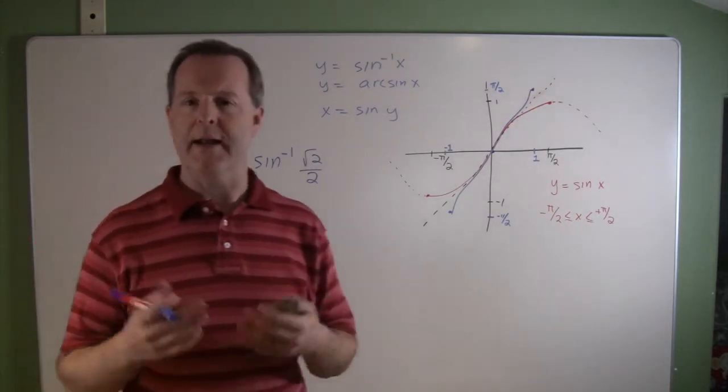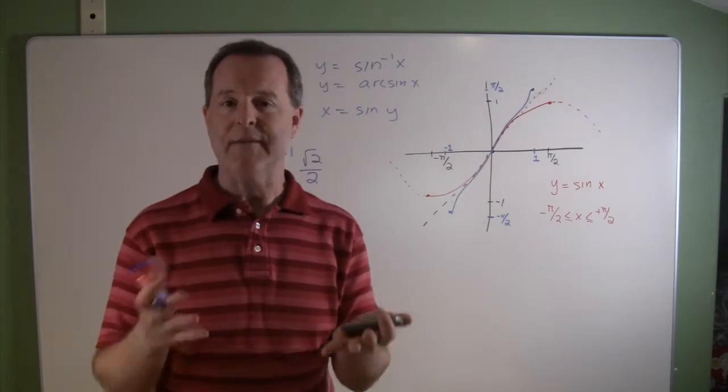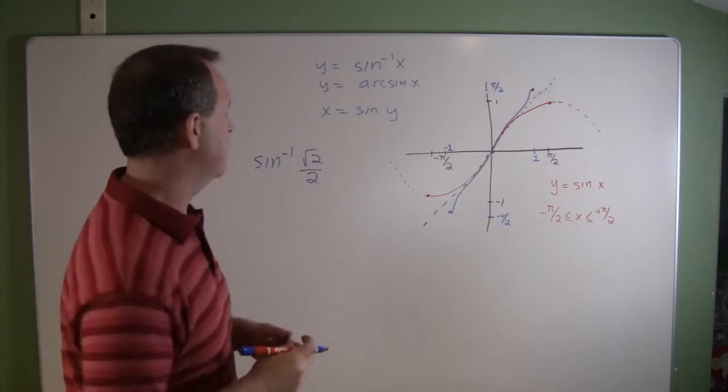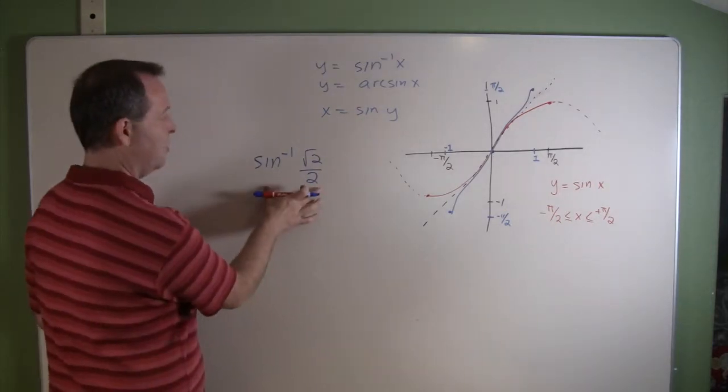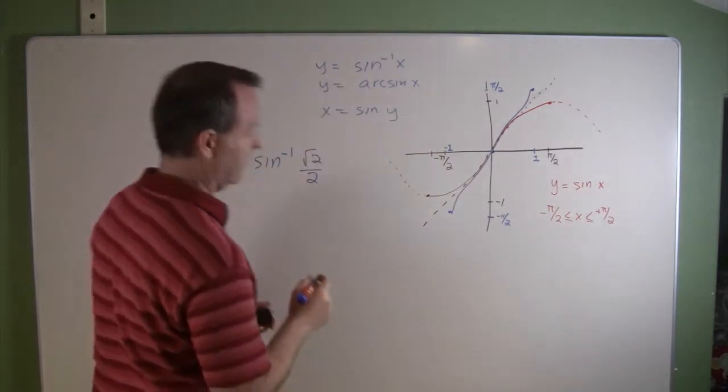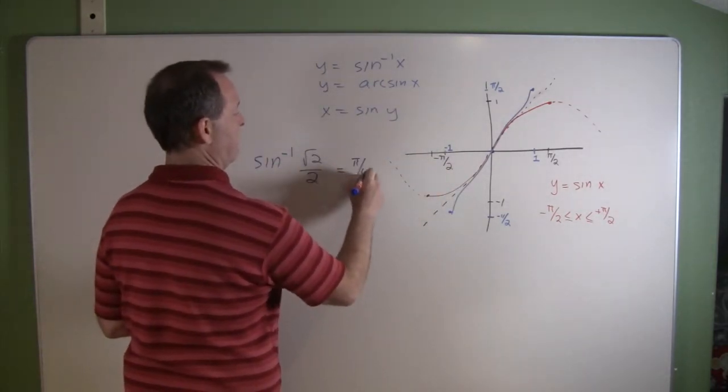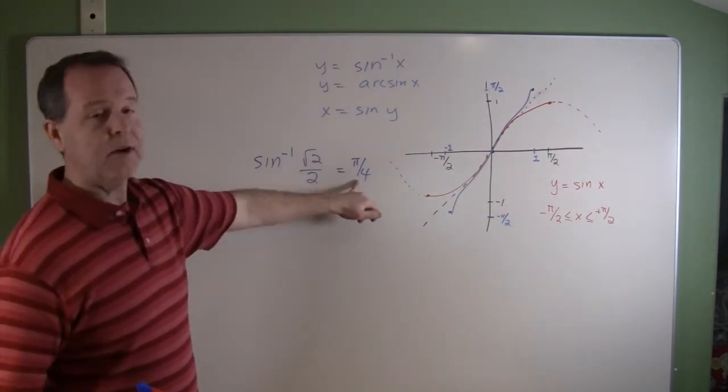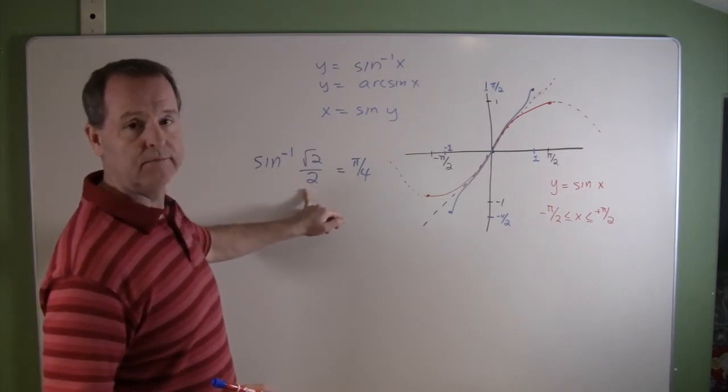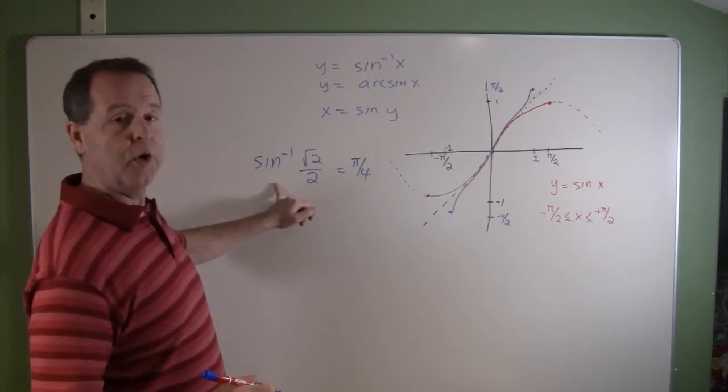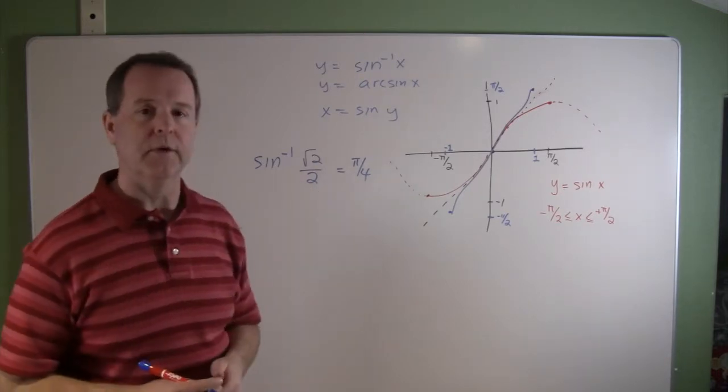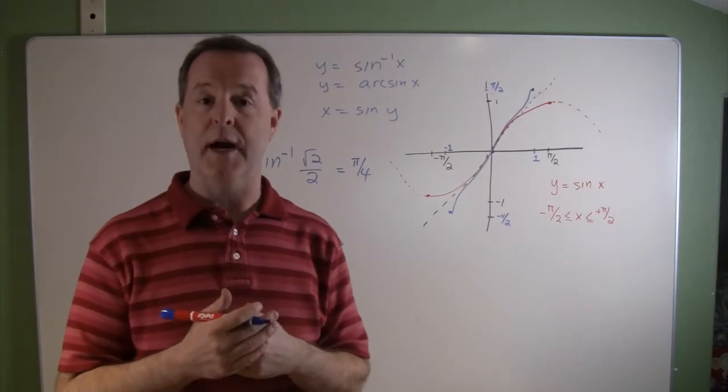And this is where we have to go back and kind of remember some of those key points, those key angles, those key values that we had for sine functions. So we remember whose angle makes a root 2 over 2? And that was pi over 4. So the angle pi over 4, the sine of pi over 4 is root 2 over 2. And how this says again is whose angle produces a root 2 over 2.